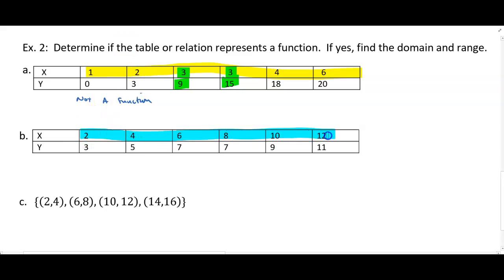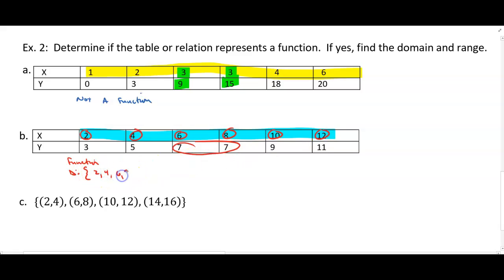In the next table, do any x-values repeat? No. Remember: it's okay for y-values to repeat, not x-values. For every input there's exactly one output, so this is a function. The domain — since this is discrete data — is just each individual x-value: 2, 4, 6, 8, 10, and 12. The range is just the set of y-values: 3, 5, 7, 9, and 11.